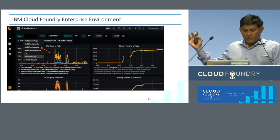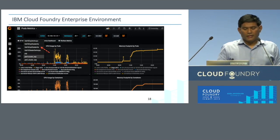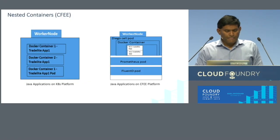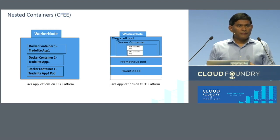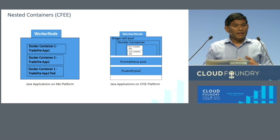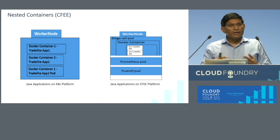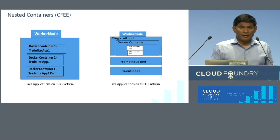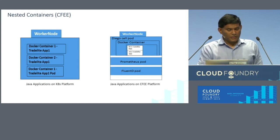This is just a dashboard view where you can see application-level, container-level, and pod-level resource usage. Now let's talk about engineering problems you'll encounter. With this architecture, you get nested container issues — garden containers within a Docker container. You need to consider how to scale and whether there are any performance issues.